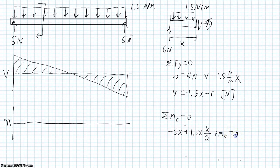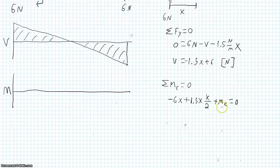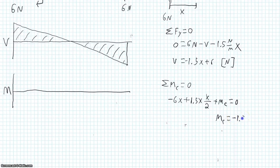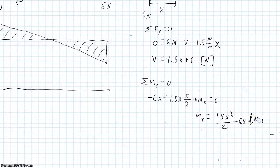And all this is equal to 0. And so our total moment at the cut is going to be equal to 1.5x squared over 2 minus 6x. And our units are newton meters.